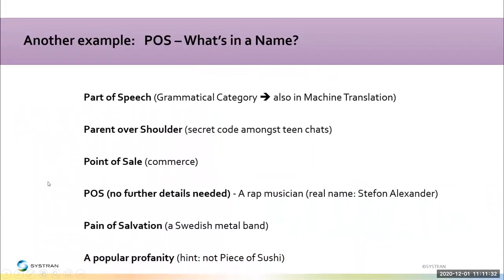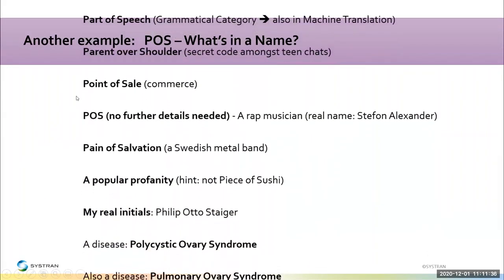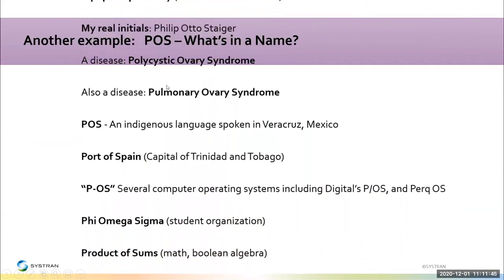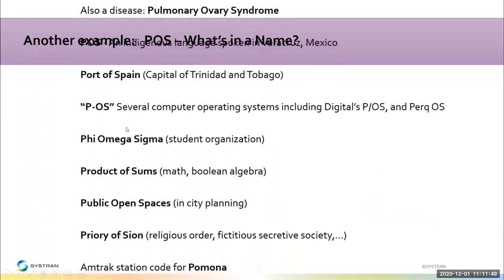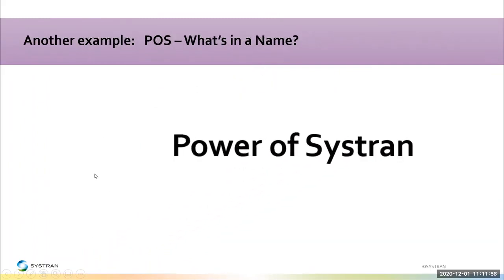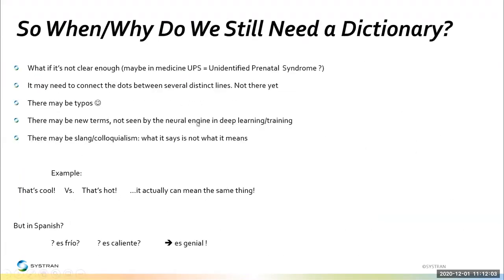Like POS — point of sale quite often, or various medical meanings like polycystic ovary syndrome or pulmonary ovary syndrome, or even a train station called POS in Pomona, California. I like to call it the power of SysTran because you can make it better if you need to, and it's not a big effort. We see cases where we really benefit from having control of that terminology. When and why do we still need dictionaries? Because sometimes it's just not clear or not clear enough. In medicine, UPS might mean unidentified prenatal syndrome, and if you want to translate with that meaning, you have to spell it out. Dictionaries will help.